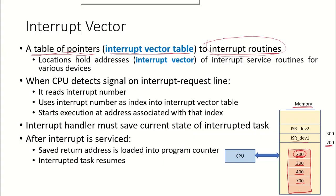At address 300, there is another interrupt service routine for another kind of device. So this table of pointers points to the different interrupt routines, and the locations in this table hold the addresses. These addresses are known as interrupt vectors — so 200, 300, 400 are all interrupt vectors — and they point to the addresses of the interrupt service routines for the various devices.